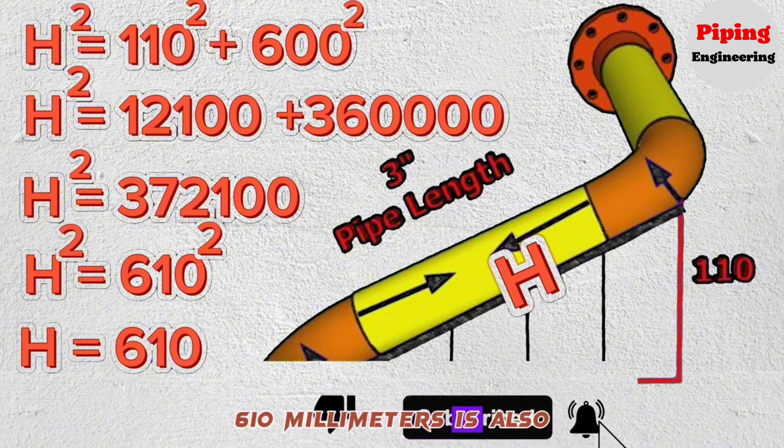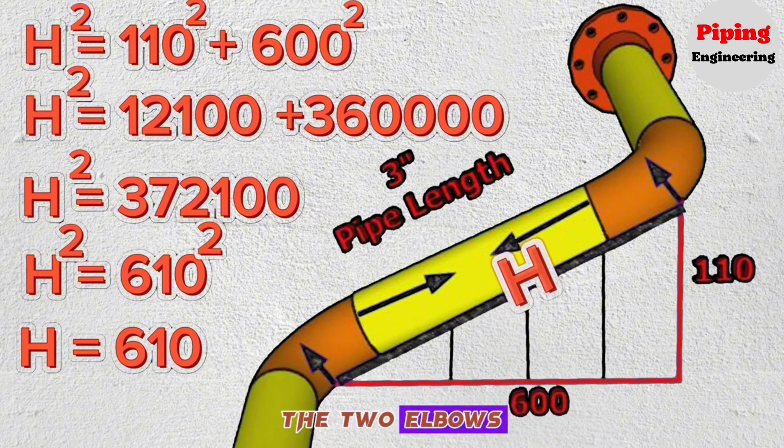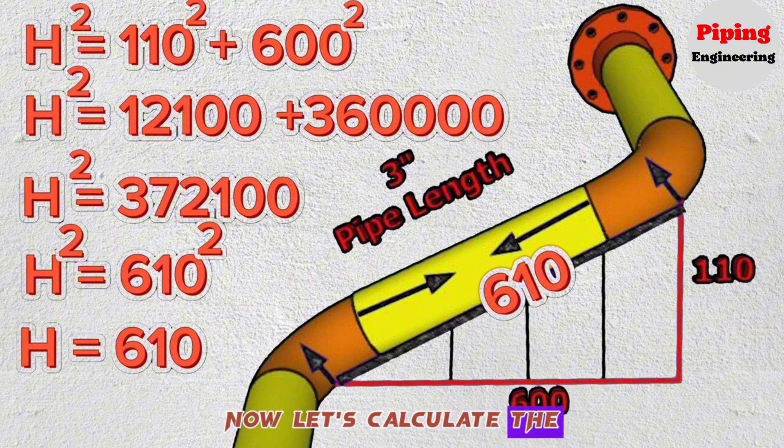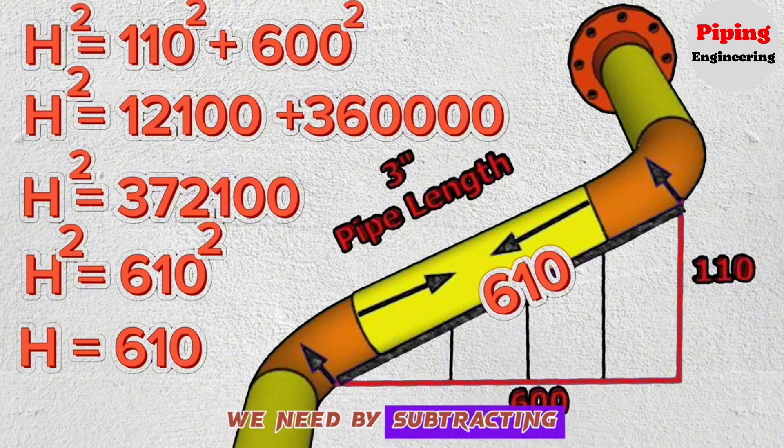610 millimeters is also the distance between the two elbows. Now let's calculate the length of the yellow pipe we need by subtracting the lengths of the two elbows from this total length.